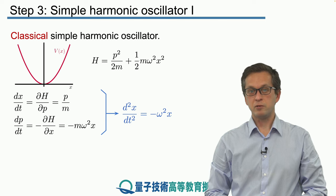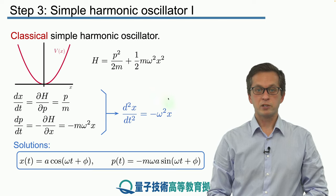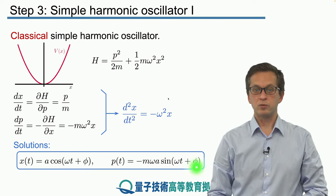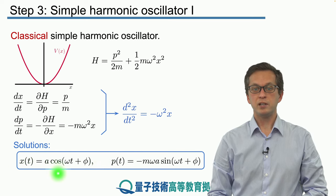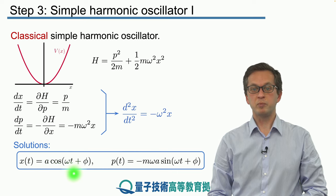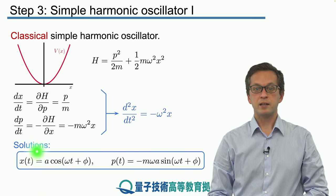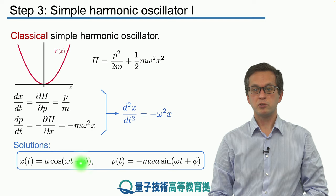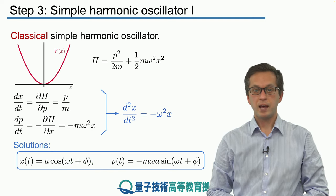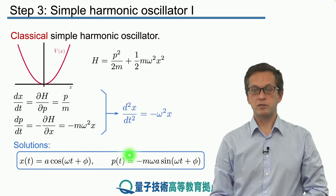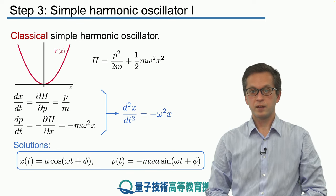And it's very easy to solve. The solutions are given by x as a function of t: a cos omega t plus phi, where a is some amplitude that we can choose, and phi is just some phase. The corresponding p is given by this following expression.